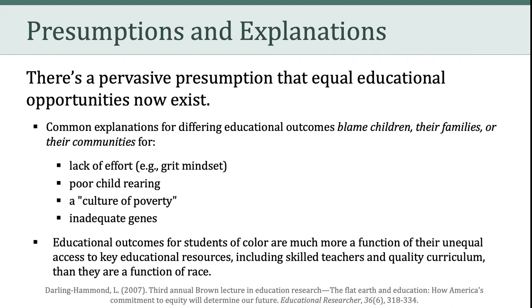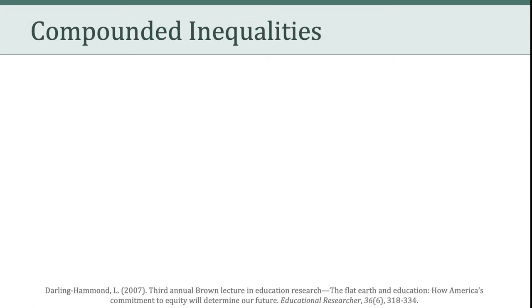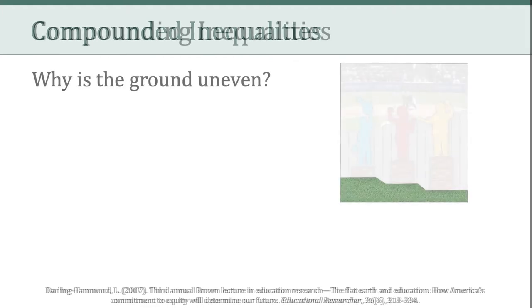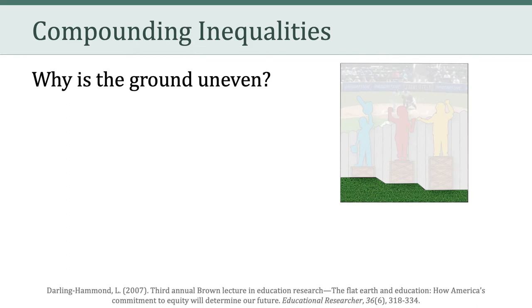However, Darling Hammond counters by saying that educational outcomes for students of color are much more a function of their unequal access to key educational resources, including skilled teachers and quality curriculum. She also raises a very important point: this idea of compounding inequalities. And if we connect this to our illustrated metaphor, we can ask ourselves: why is the ground so uneven? Darling Hammond explains this through the concept of compounding inequalities.